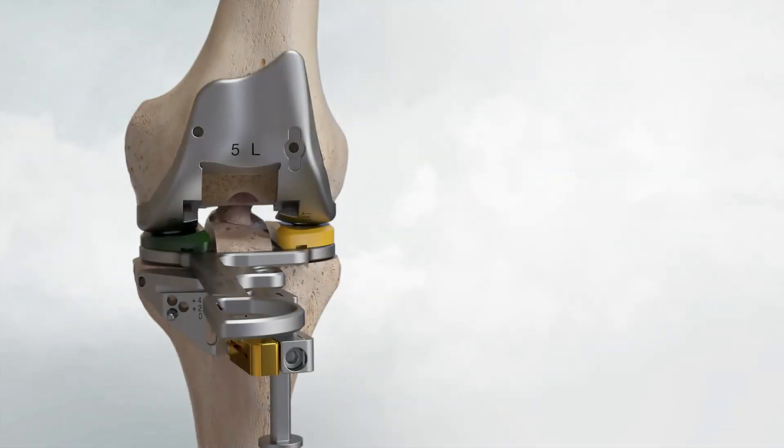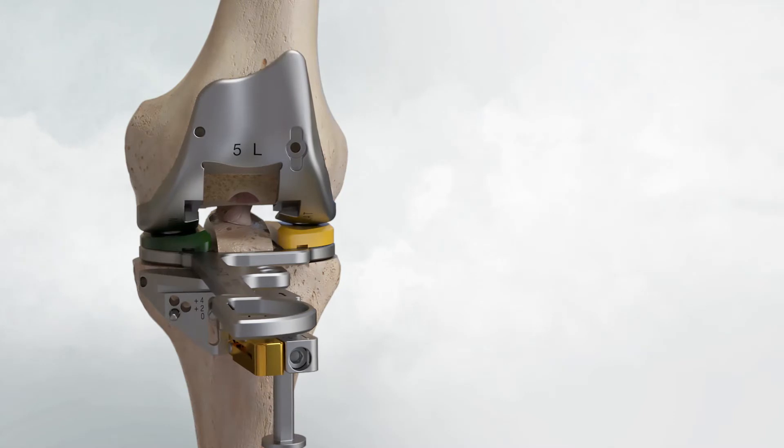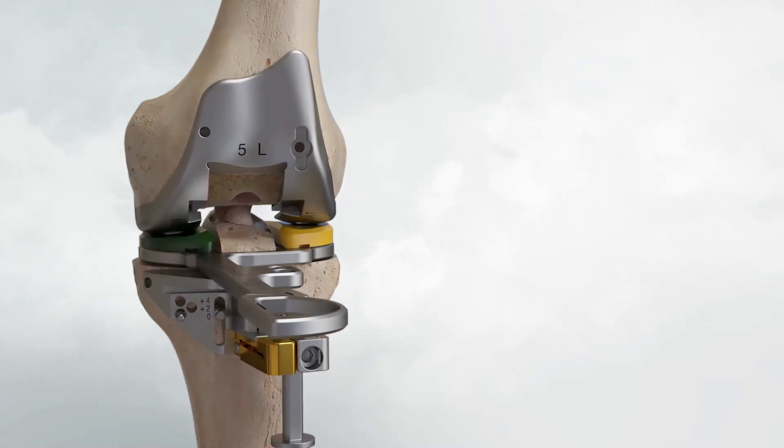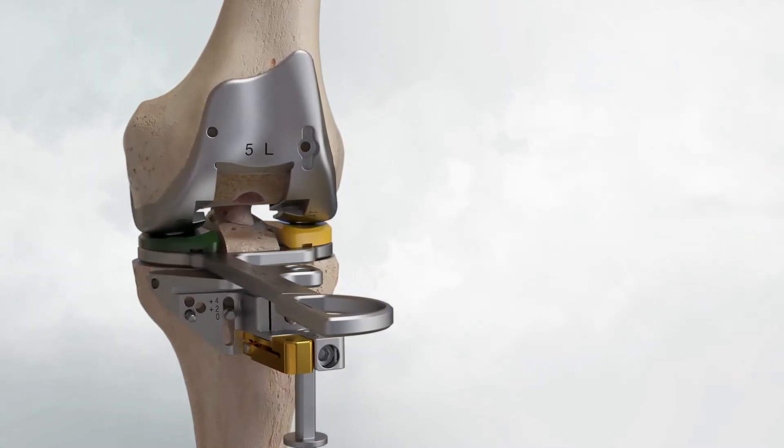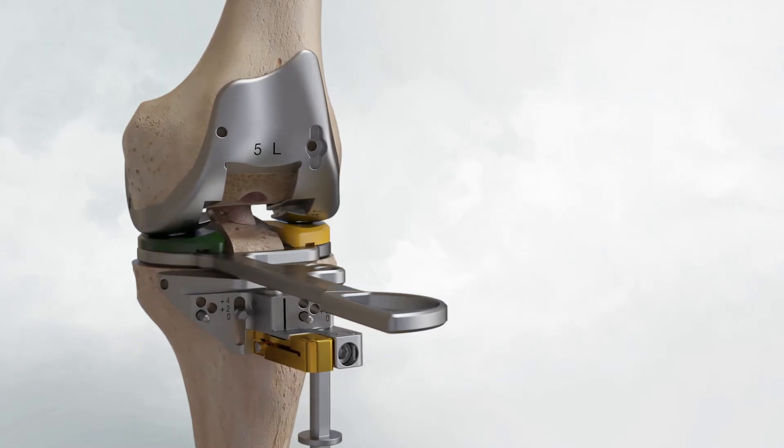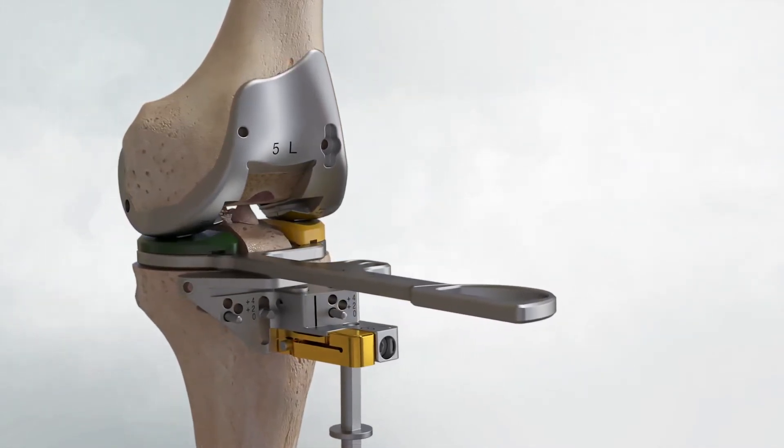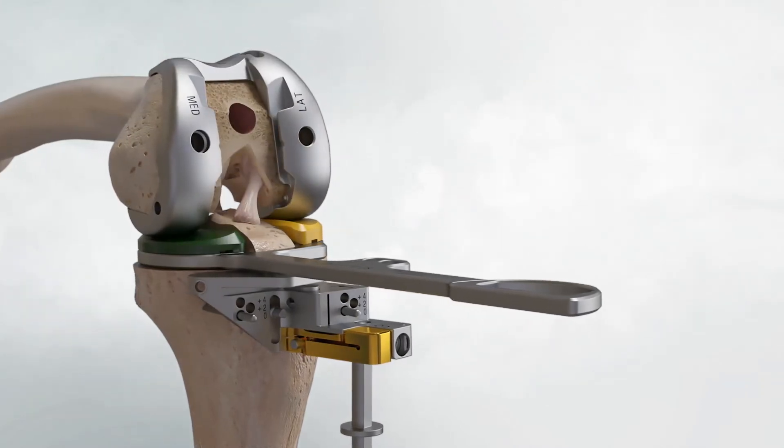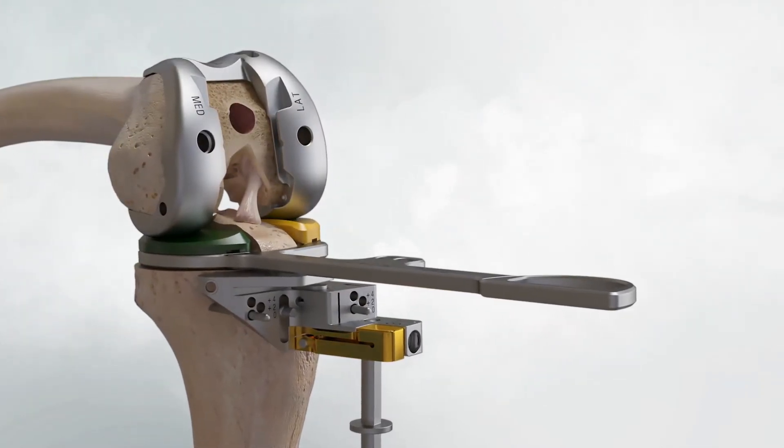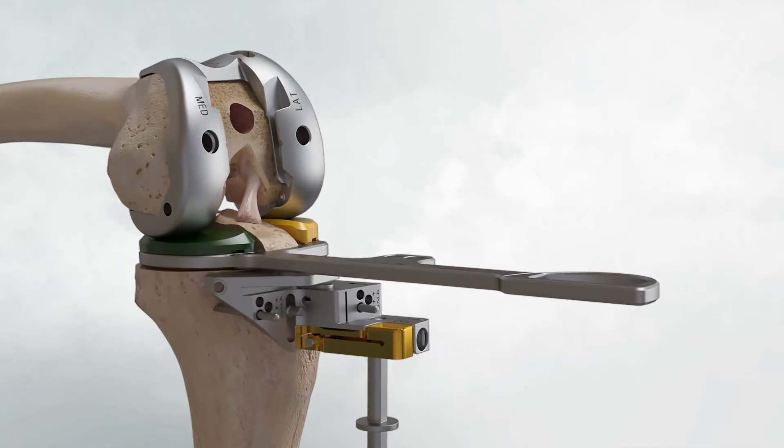Select the full insert trial option that provided optimal medial balance. Gauge and ensure 1-2 mm of medial and lateral extension laxity. Gauge and ensure 1-2 mm of medial flexion laxity. Lateral flexion laxity may be greater, but a minimum of 1-2 mm is suggested.